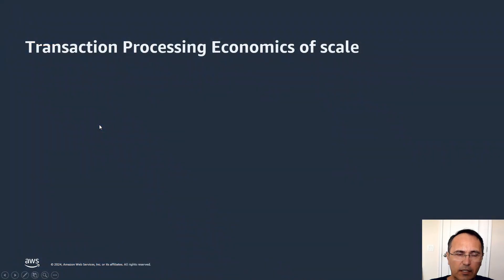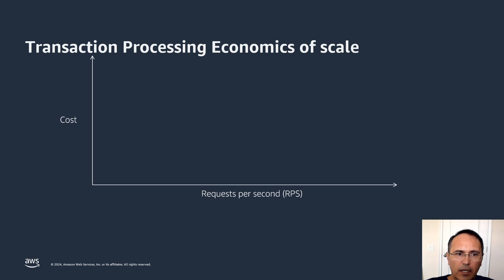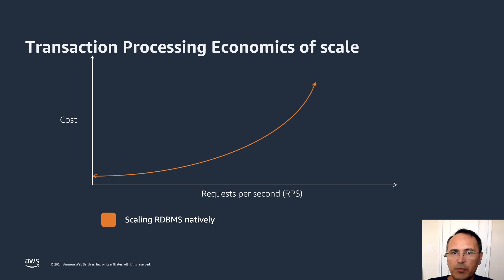Before we get into the details, the tools and the techniques, first we have to understand the economy of scale — scaling your current relational database. If you look at this graph, on the x-axis we represent requests per second, and on the y-axis the cost. As you can see, early on the curve is fairly flat and shallow, but as the number of requests increases, so will the cost for your relational database. This has to do inherently with the scaling techniques available to your database, which I will get into more detail later on.